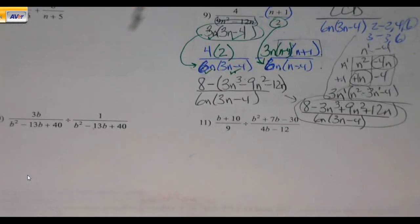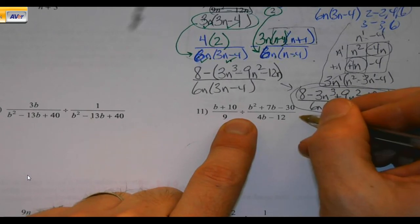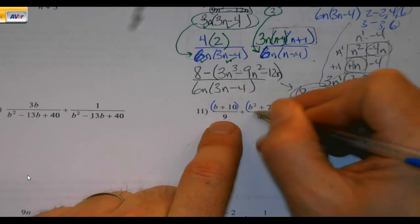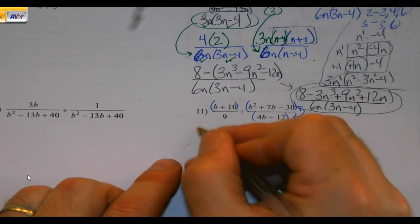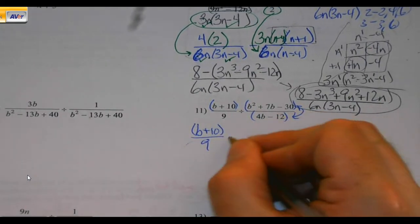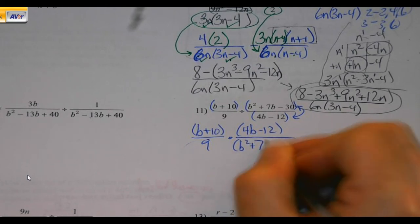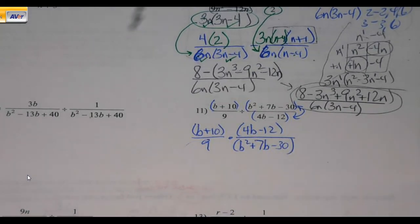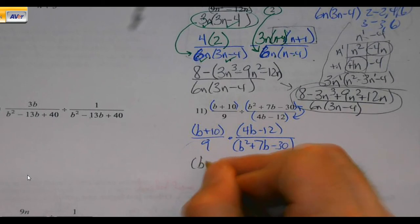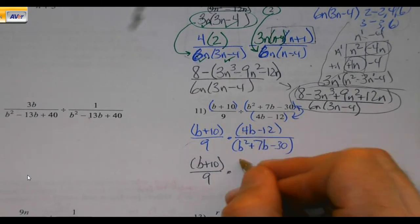Sometimes there will be some simplifyingness. Sometimes there won't. Now, notice, rules have changed. Now, we're dividing. What does that mean? It means we're going to flip our second fraction over. Some of you would actually write the arrows on our last quiz and then you'd never do anything with it. So, it's worth the extra little bit of work to get that set.